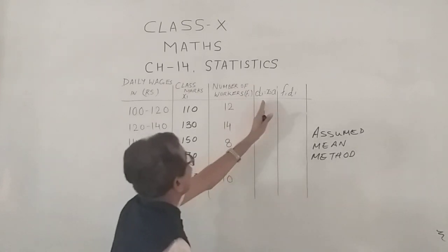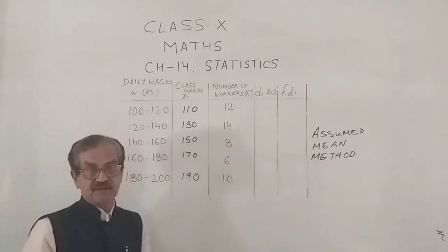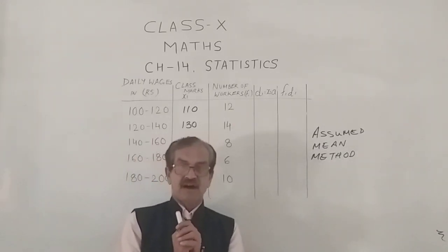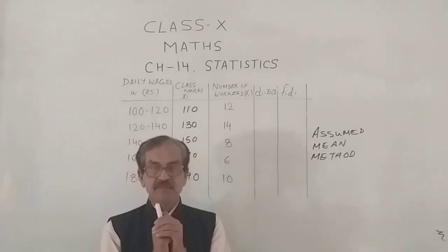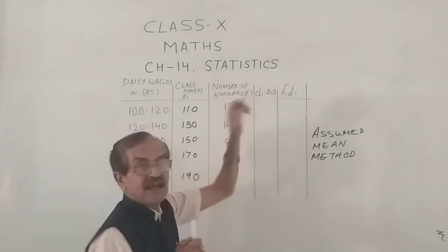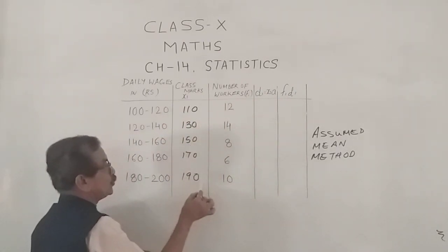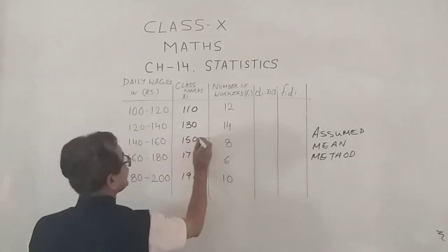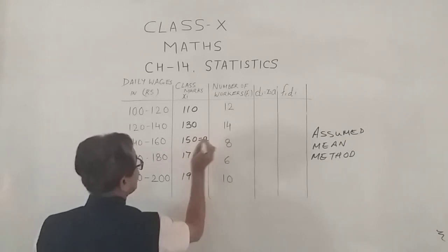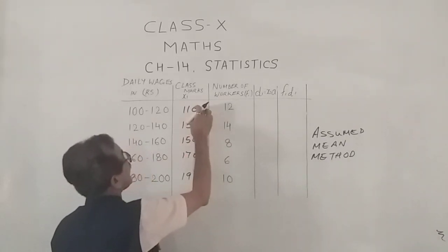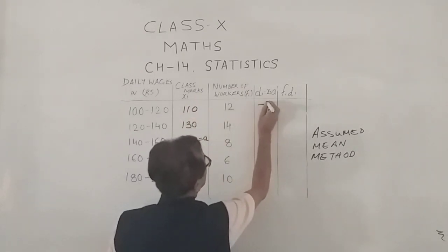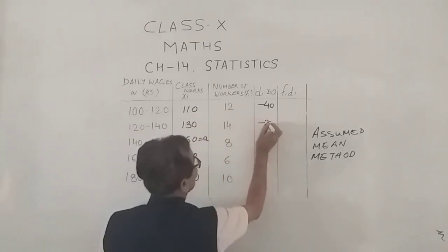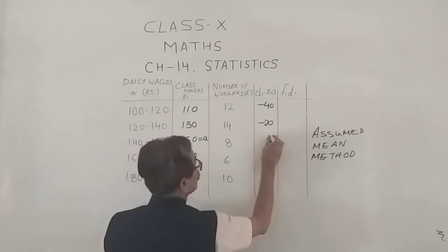Then we calculate Di, which is the deviation. Deviation is basically the class marks (xi) minus the mean. However, we don't have the mean, so we assume A — we assume one of the terms to be the mean, only for calculation purposes. Let us say the assumed mean is 150. So xi minus A: 110 minus 150 is minus 40, 130 minus 150 is minus 20, and 150 minus 150 is 0, and so on.